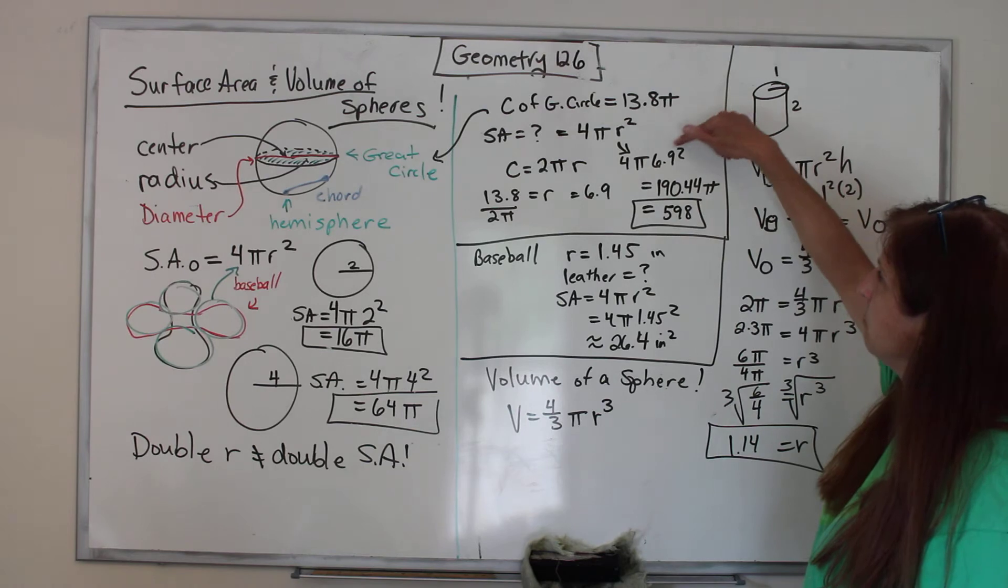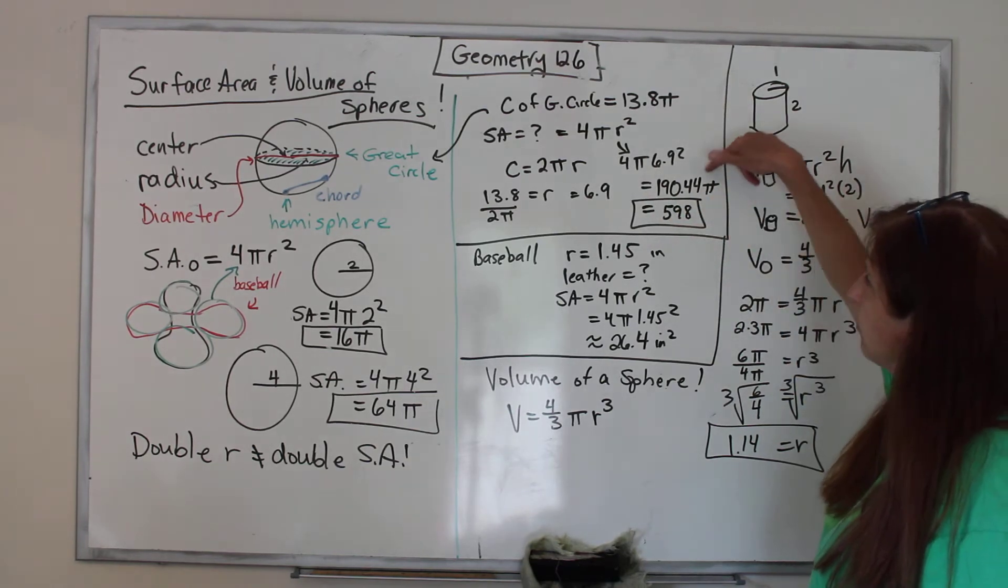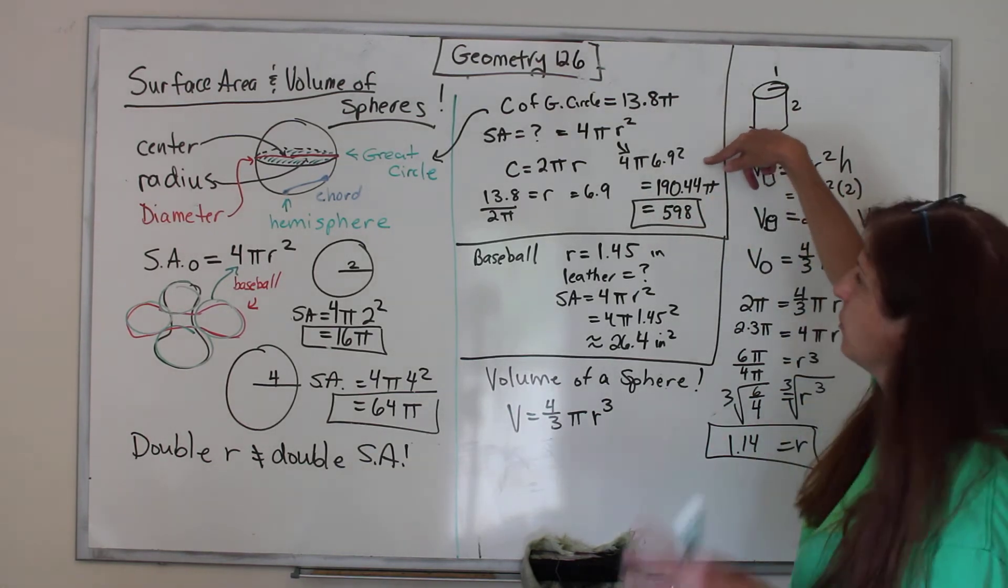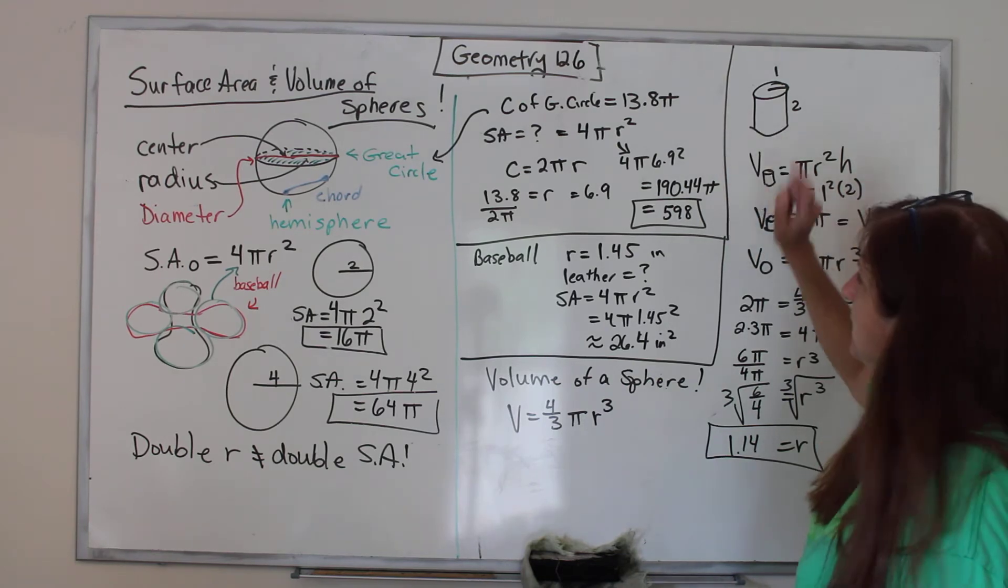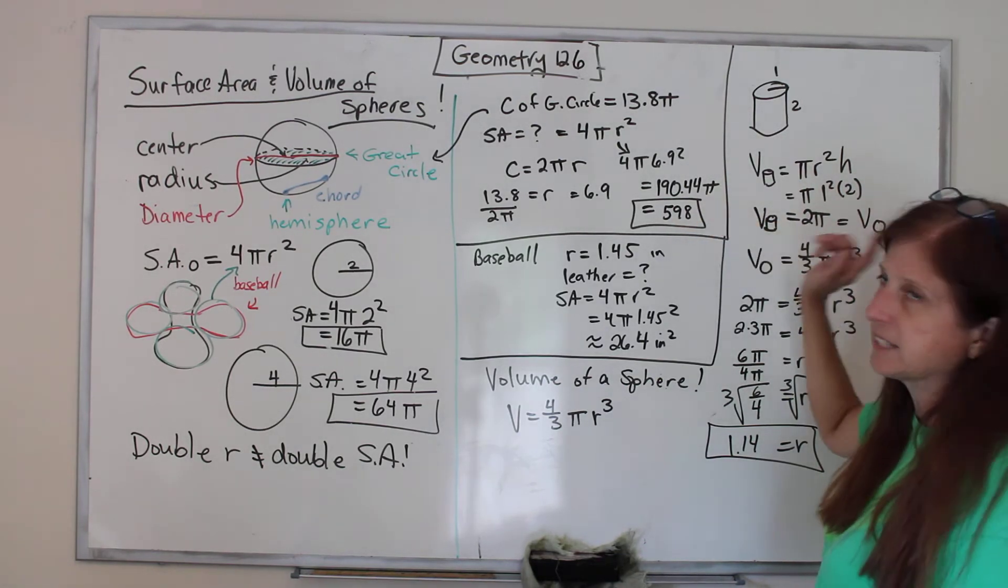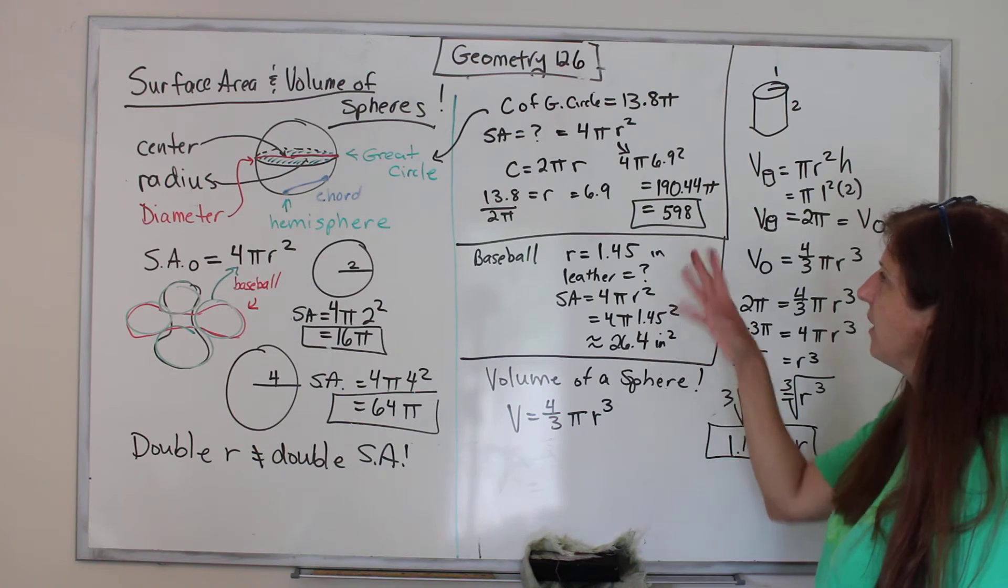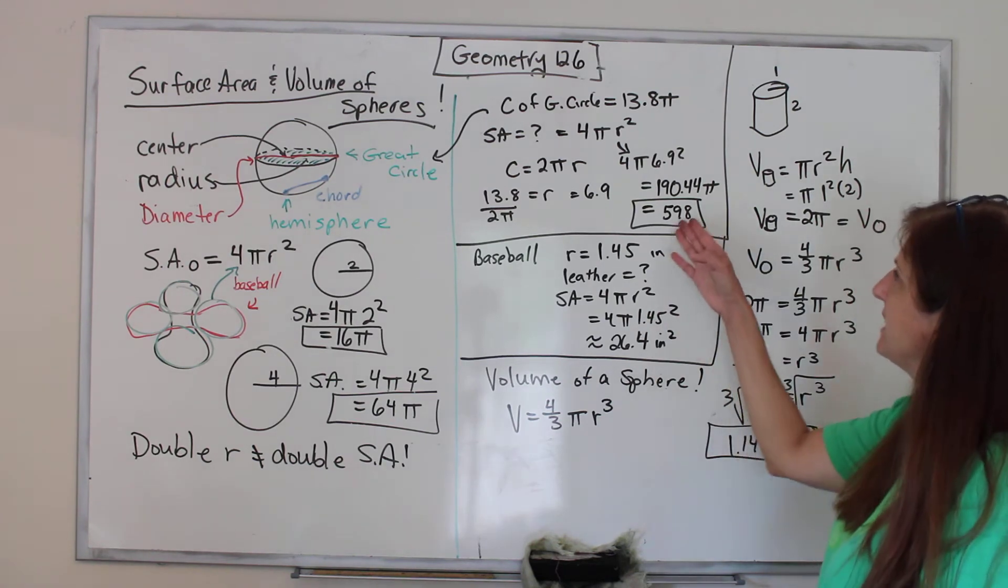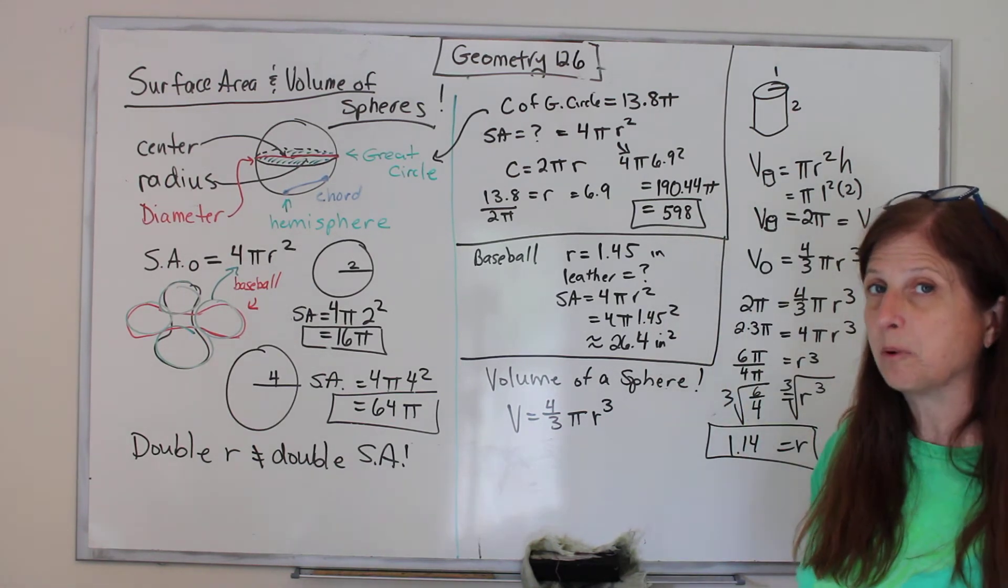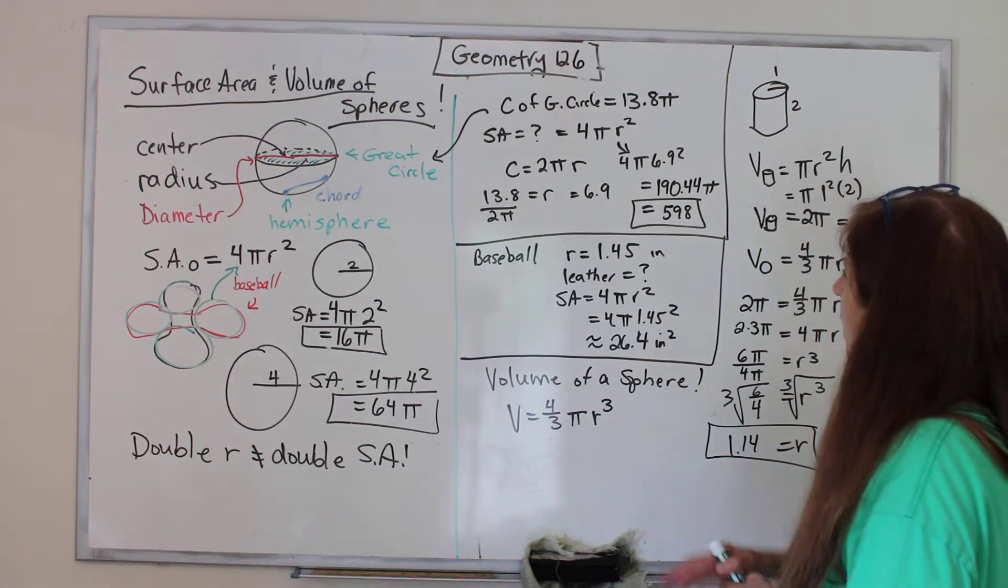Now we can put it in our formula. 4π(6.9²) is 190.44π, which is really considered the right answer, but nobody knows what that is. So you have to estimate it, and it's about 598. It will never be exact when pi is involved, because it's irrational.